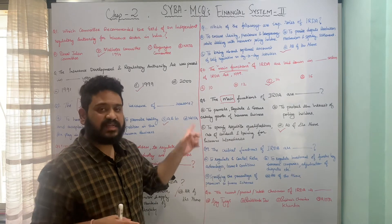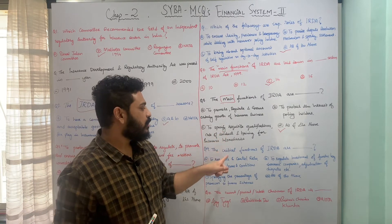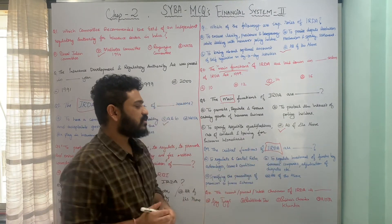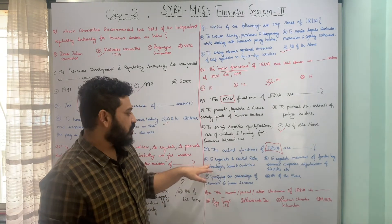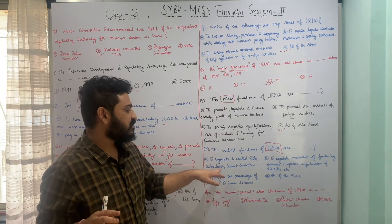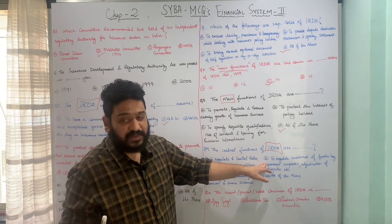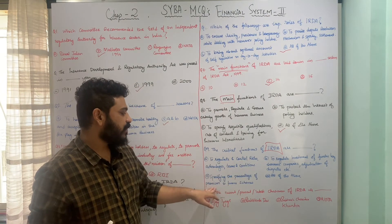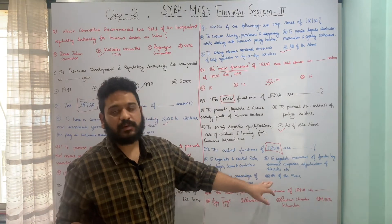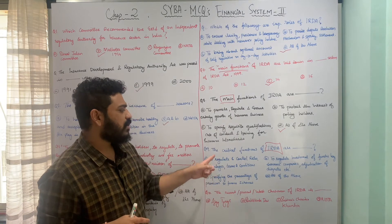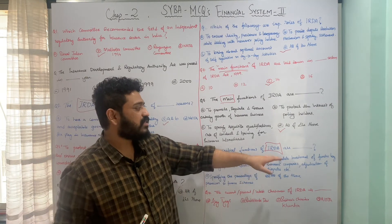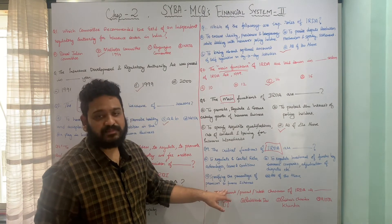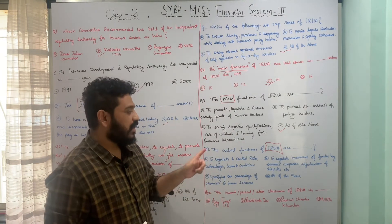The next question asks about the critical functions of IRDA. The options are: A - to regulate and control rates, advantages, terms and conditions; B - to regulate investment of funds by insurance companies and adjudication of disputes; C - specifying the percentage of premium to finance schemes; D - all of the above. All three are critical functions of IRDA, so Option D — all of the above — is the correct answer.